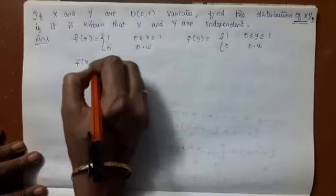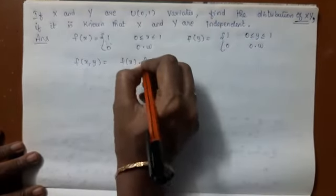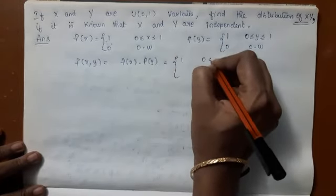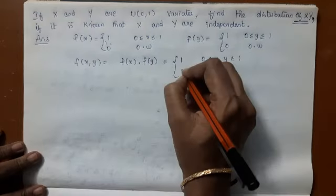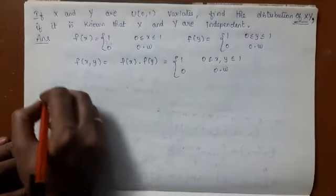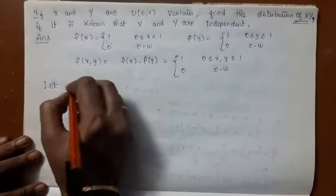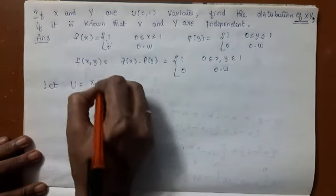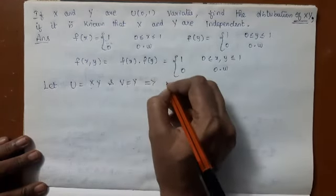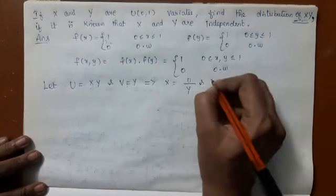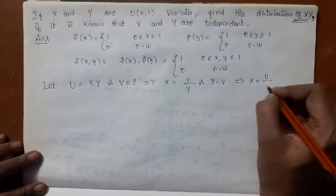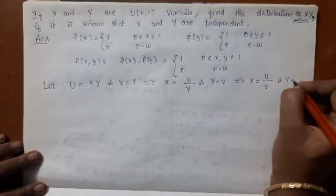Since the variables are independent, f(x, y) = f(x)·f(y), which equals 1 for 0 ≤ x, y ≤ 1, and 0 otherwise. Now we need to find the distribution of xy. Let us take the following transformations: u = xy and v = y, which implies x = u/v and y = v.